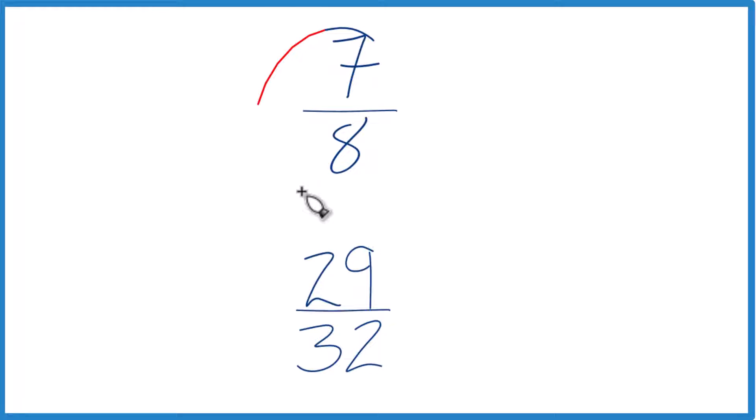So let's say you have the fraction 7 eighths and 29 32nds. How do you tell which one's greater?